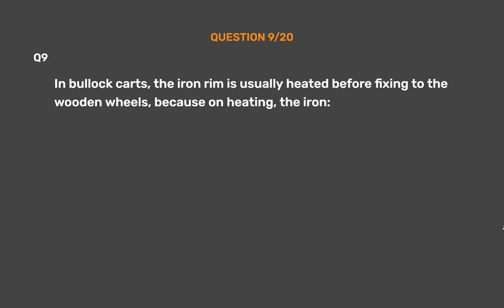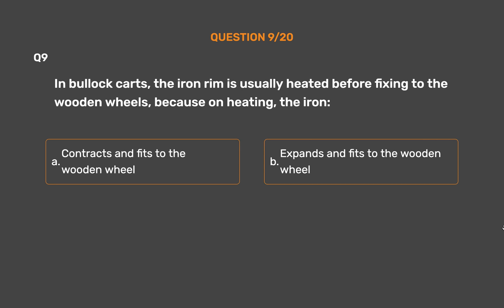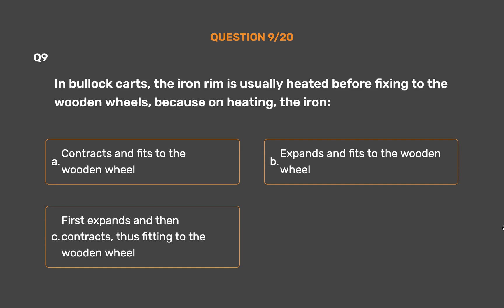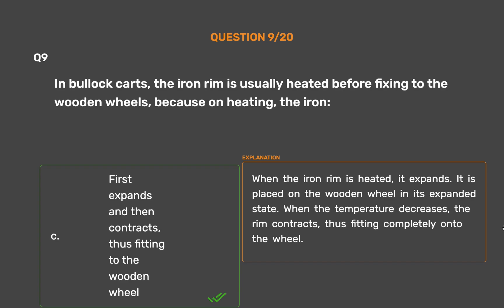Question number 9: In bullock carts, the iron rim is usually heated before fixing to the wooden wheels, because on heating, the iron — Option A: Contracts and fits to the wooden wheel. Option B: Expands and fits to the wooden wheel. Option C: First expands and then contracts, thus fitting to the wooden wheel. The correct answer is Option C. When the iron rim is heated, it expands. It is placed on the wooden wheel in its expanded state. When the temperature decreases, the rim contracts, thus fitting completely onto the wheel.